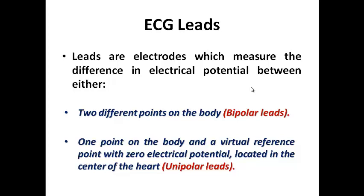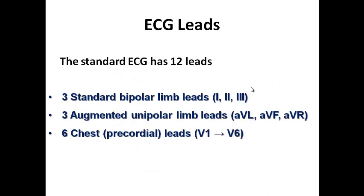We have three types of ECG leads, which can be simplified into two groups: six chest or precordial leads (V1 to V6) and six limb leads. The six limb leads are divided into two subgroups: three standard bipolar limb leads (lead I, lead II, lead III) and three augmented unipolar limb leads (AVL, AVF, AVR). So in total we have three bipolar limb leads, three unipolar limb leads, and six chest leads.